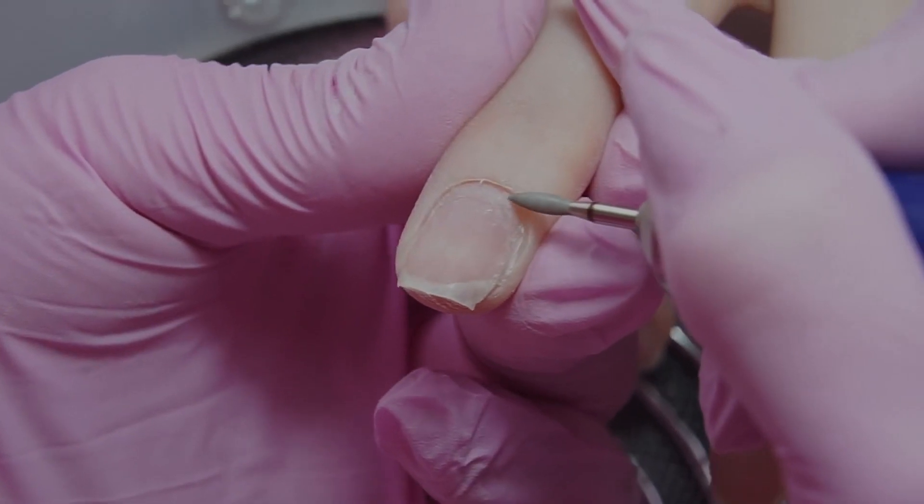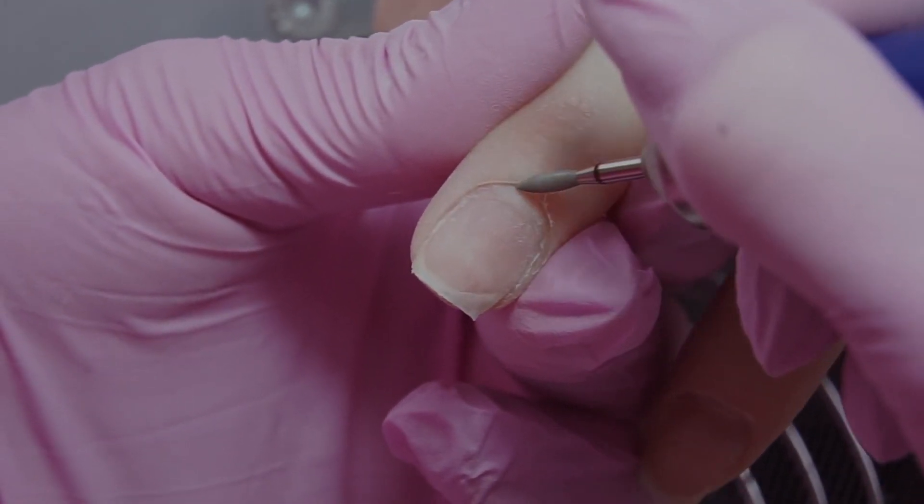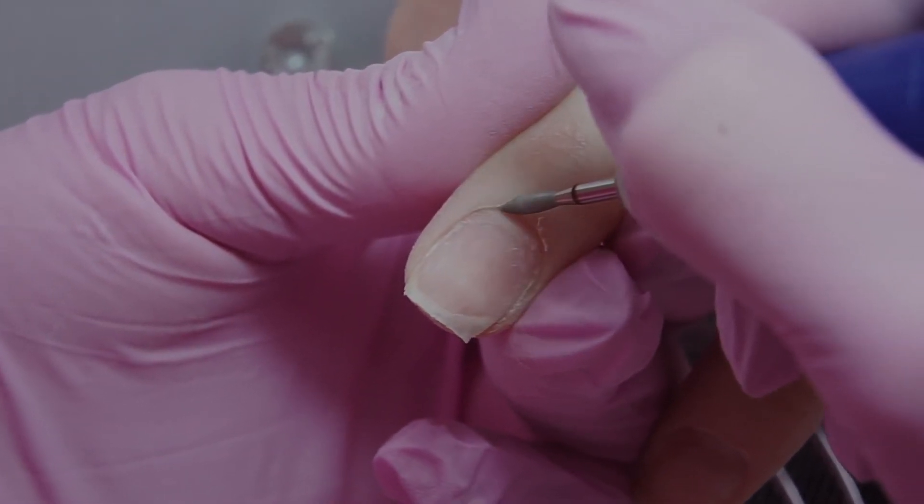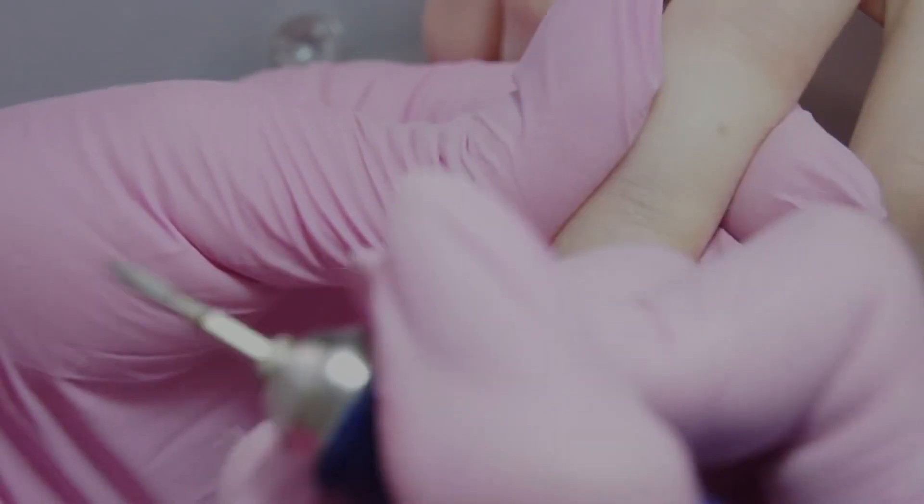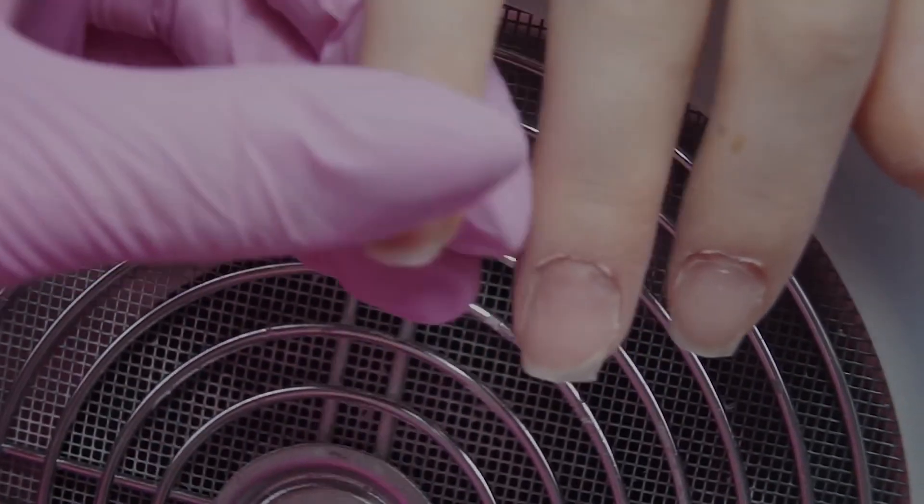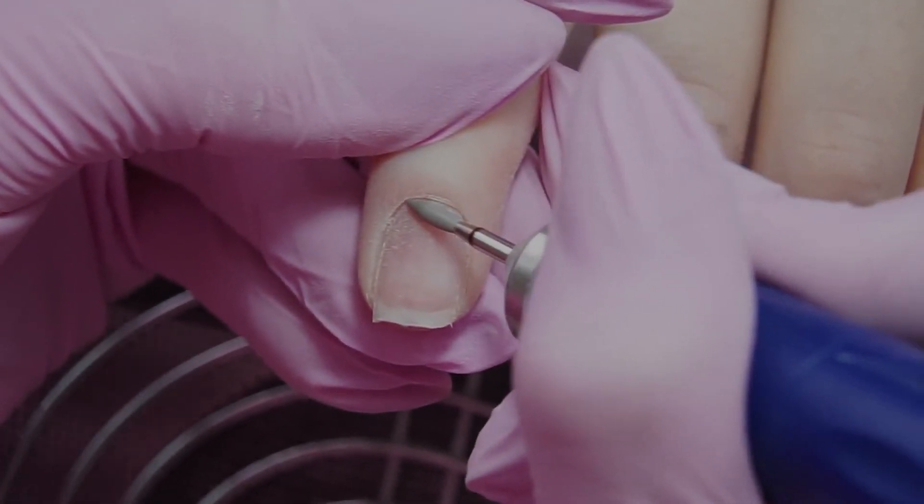Lifting of the cuticle very gently, with no pressure, I don't want to injure. It's important to completely remove pterygium from the nail plate, because otherwise it will cause lifting of the coating. Don't over-file on the same place, as the nail may get too thin.